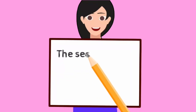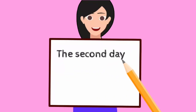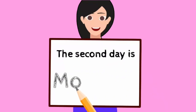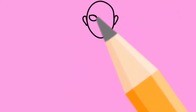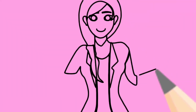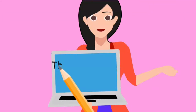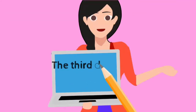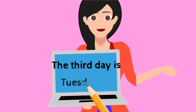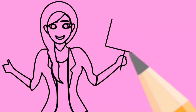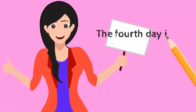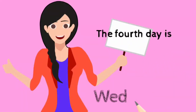The second day of the week is Monday. And then the third day of the week is Tuesday. From Tuesday, we go to the fourth day of the week, which is Wednesday.